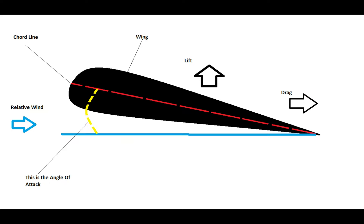The angle of attack is marked by the dashed yellow line — it is the angle between the cord line and the relative wind. Most aircraft will tend to stall at an angle of attack of about 18 to 20 degrees. Also, when we drop our flaps, you can see that changes the cord line angle, thus changing the angle of attack. Because the cord line ends at the trailing edge of the wing, dropping the flaps dramatically changes the cord line angle.